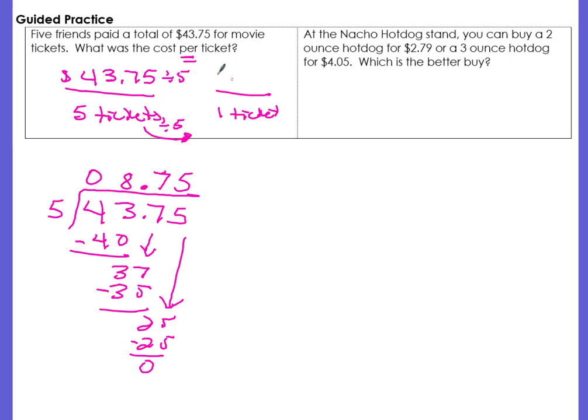So the cost per ticket is $8.75. At the nacho hot dog stand, you can buy a two ounce hot dog for $2.79 or a three ounce hot dog for $4.05. Which is the better buy?